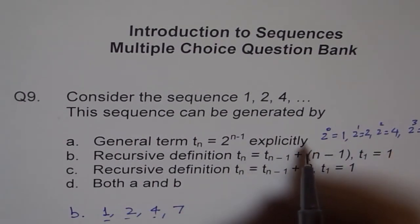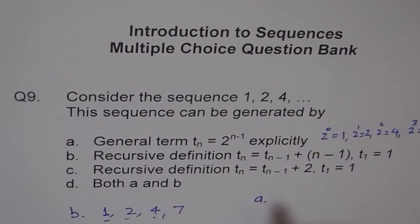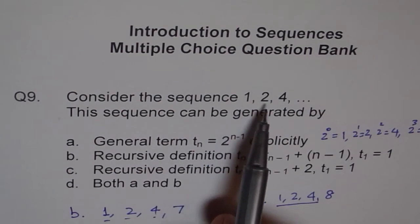So with this we get a sequence as 1, 2, 4 and 8. We get different sequences with both the formulas. But at least the first 3 terms are the same. Do you see that? So both represent the given data.